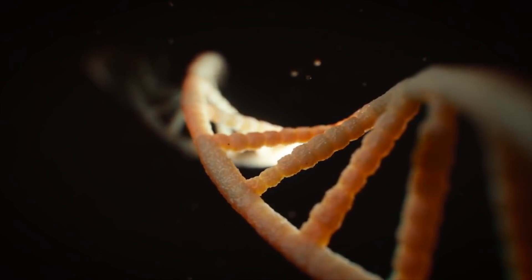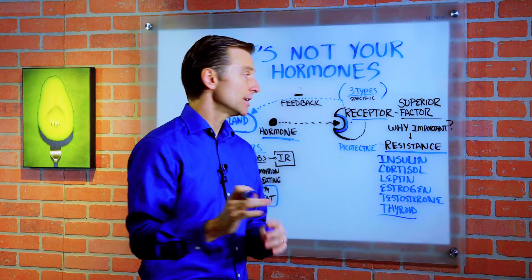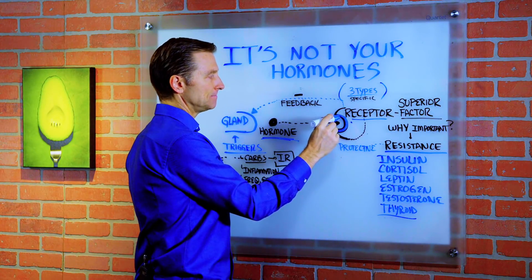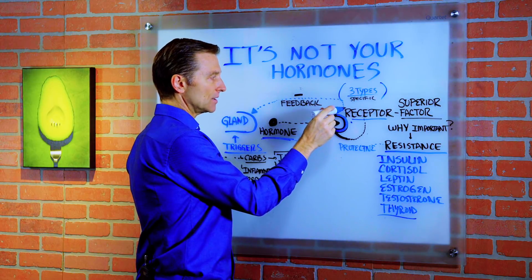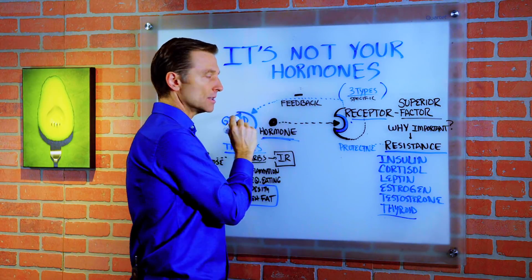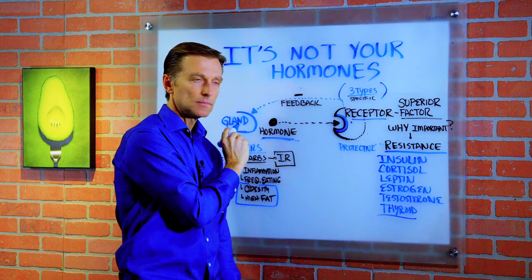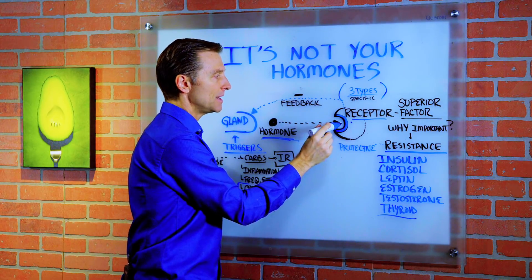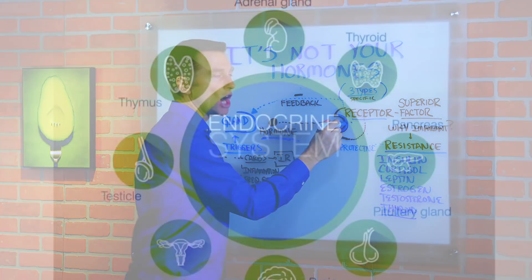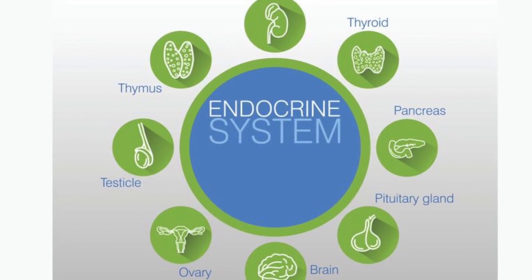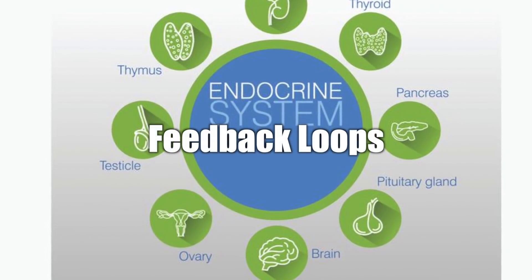So thyroid hormones can affect genetics. Once a hormone is connected, a little signal gets sent back to the gland, letting it know that the message has been received and acknowledged. In the endocrine system, we call those feedback loops.